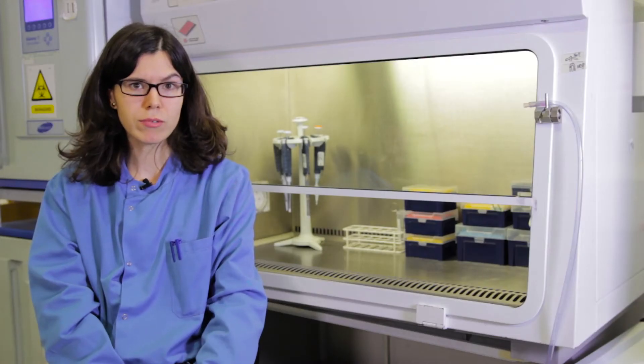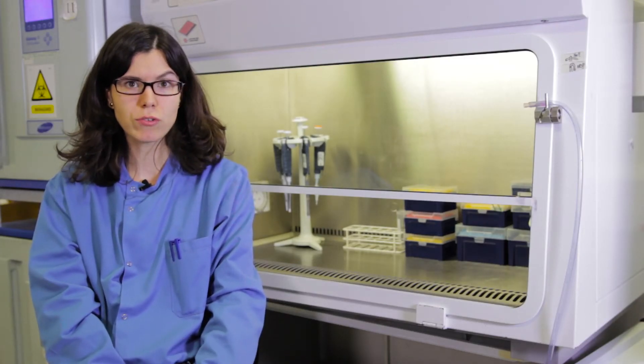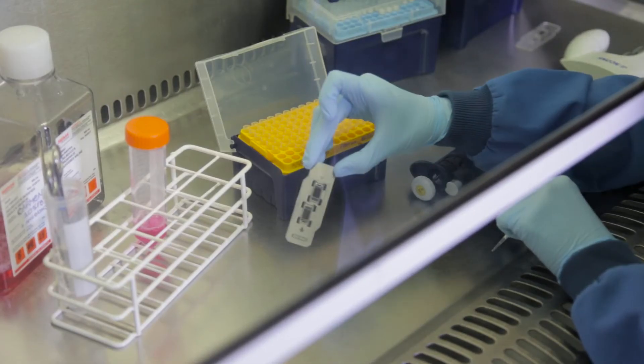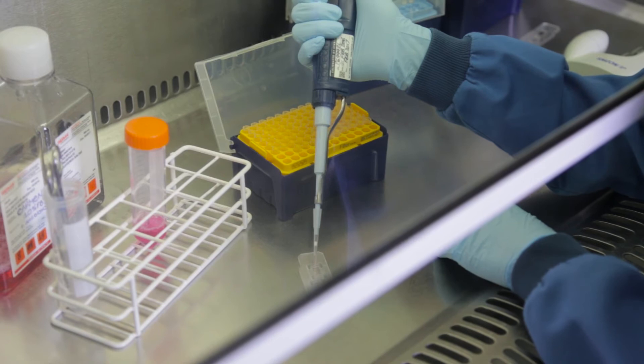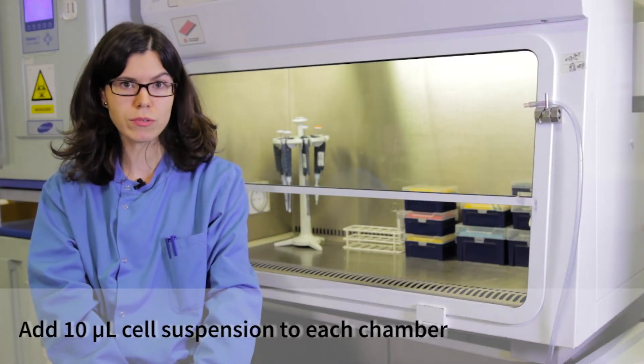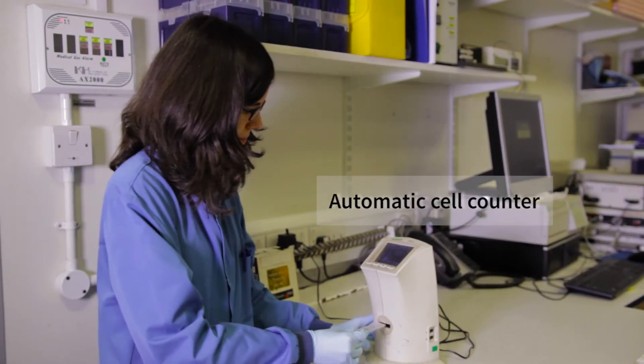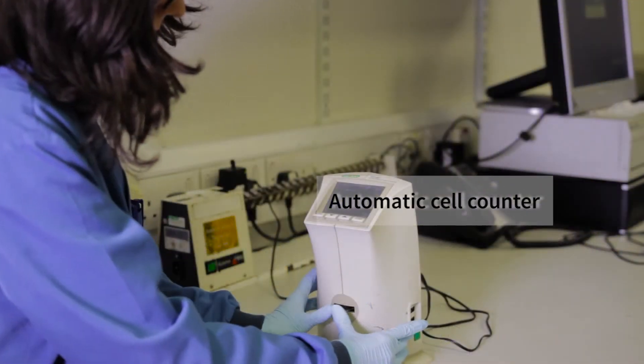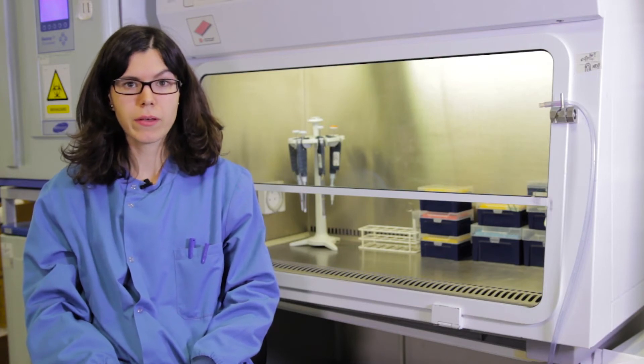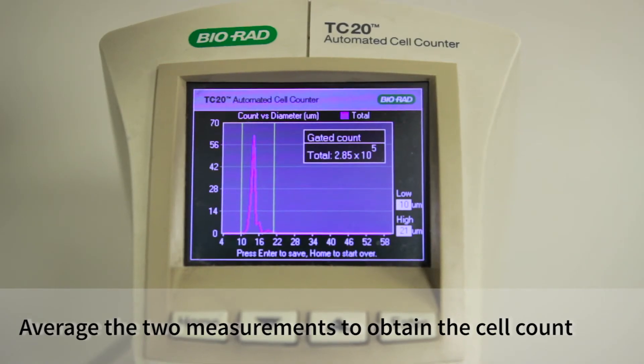Once we have neutralized the trypsin, the next step is to count the cells using an automatic cell counter. To do that, we use a special slide that contains two chambers. I add 10 microliters of cell suspension to each chamber. This is an automatic cell counter. I introduce the slide and it will count the cells in both chambers. We can then make the average between the two measurements.